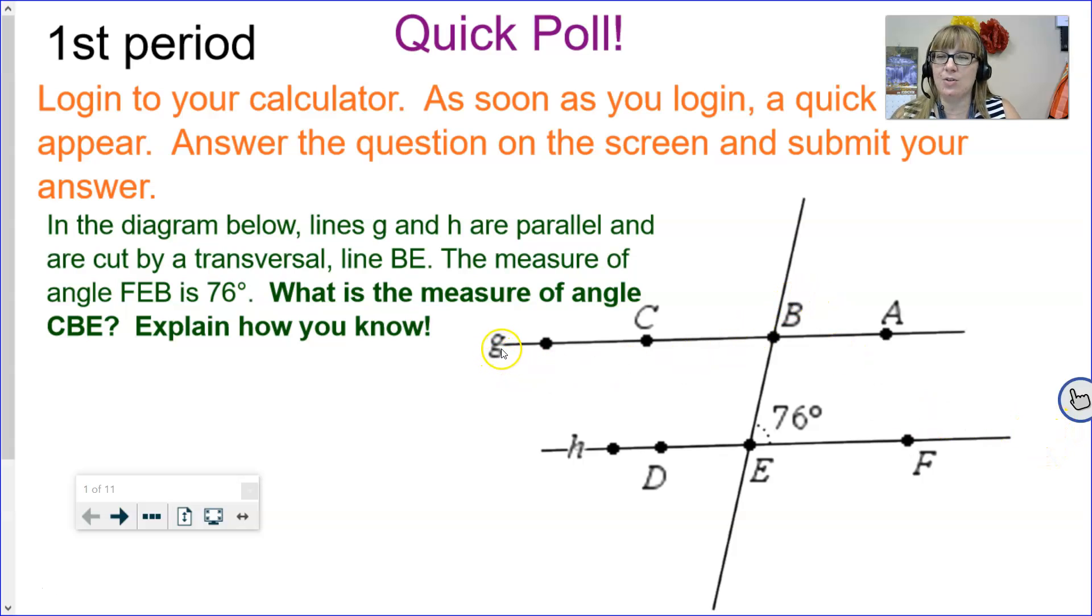We can see that line g is parallel to line h and is cut by a transversal, angle BE. The measure of angle FEB—let's make sure we know what we're talking about. F to E to B is this angle that I just traced out, and you can see it's measuring 76 degrees. What is the measure of angle CBE? Let me trace that one out. C to B to E. What is the measure of this angle here?